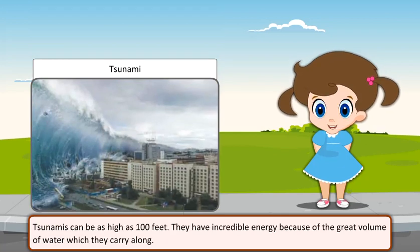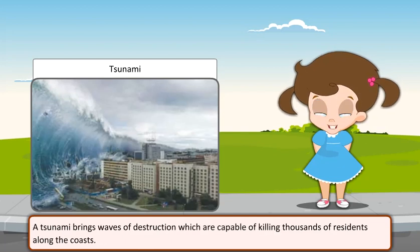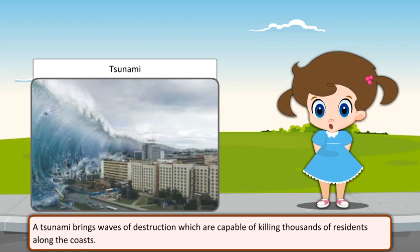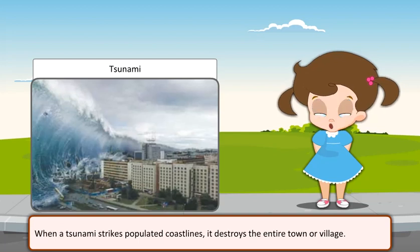Tsunamis can be as high as 100 feet. They have incredible energy because of the great volume of water which they carry along. A tsunami brings waves of destruction which are capable of killing thousands of residents along the coasts. When a tsunami strikes populated coastlines, it destroys the entire town or village.